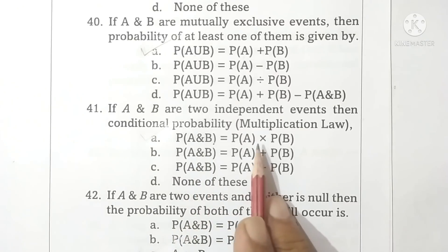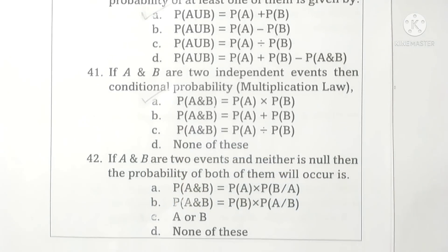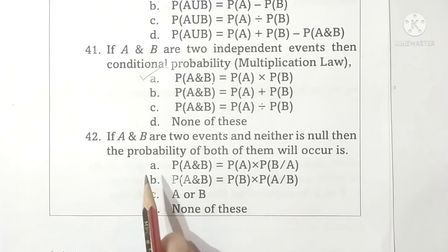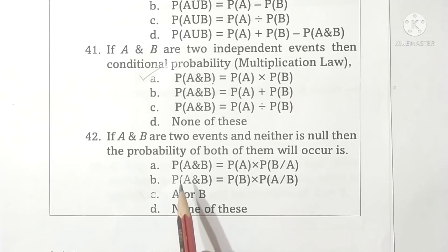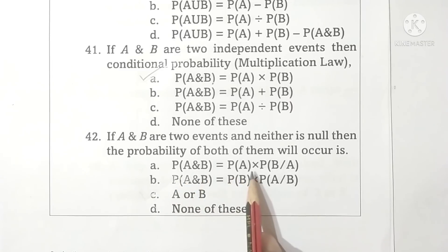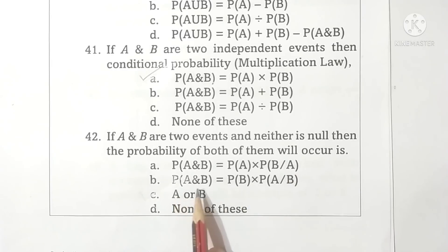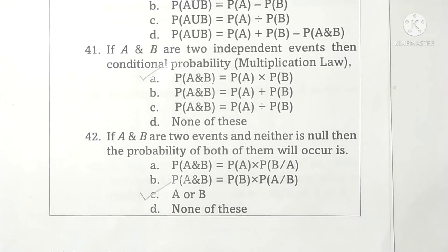Question 42: If A and B are two events and neither is null, then the probability of both of them occurring is given by probability of A and B equals probability A multiplied by probability of B given A, or probability A and B equals probability B multiplied by probability of A given B. Both options are correct, so option C is correct.